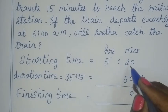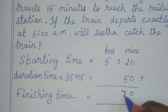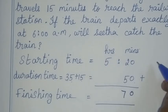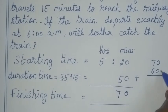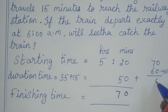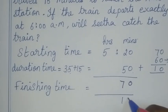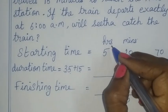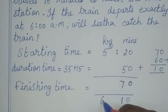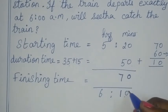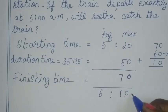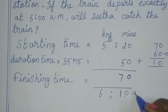Now we add the 50 minutes to 5:20am. We switch to the hours — carry over 1 hour, with 10 minutes remaining. So this gives us 6 hours and 10 minutes. The finishing time is 6:10am.